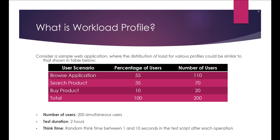Consider a sample web application where the distribution of load for various profiles could be similar to that shown in the table below. We have identified three different scenarios for performance testing: some users would be browsing the application, some would be searching for a product, and the remaining users would be buying the product. The total number of users identified for this test is 200, with the test designed to run for two hours, and a random think time between 1 to 10 seconds after each operation.